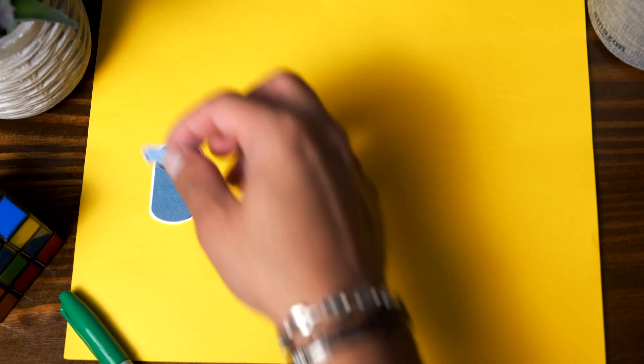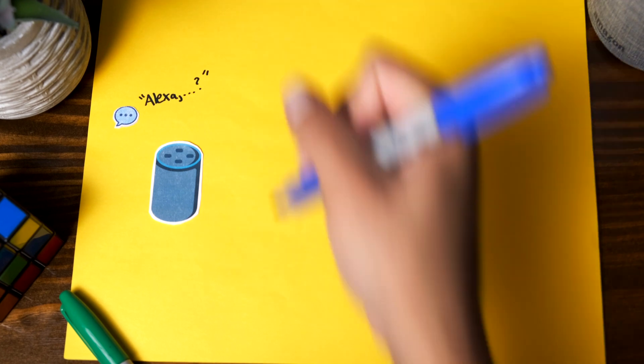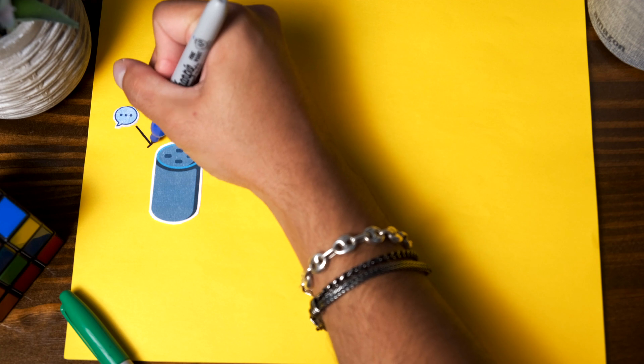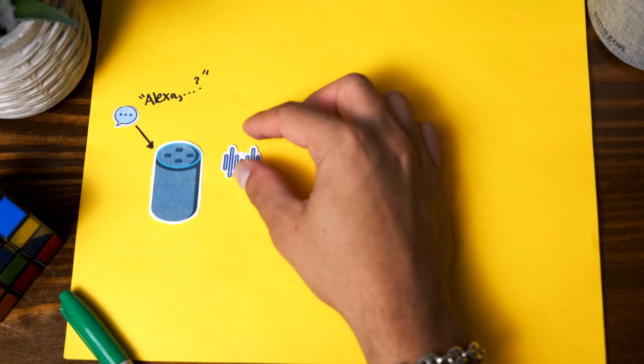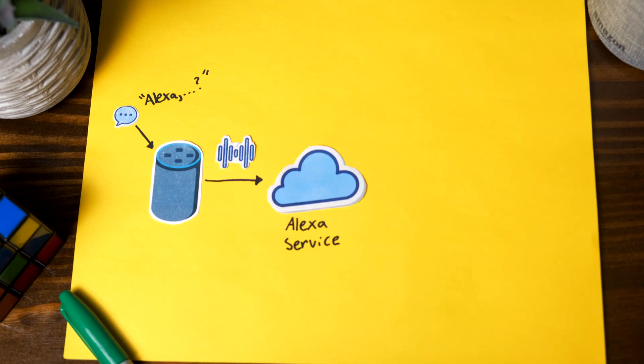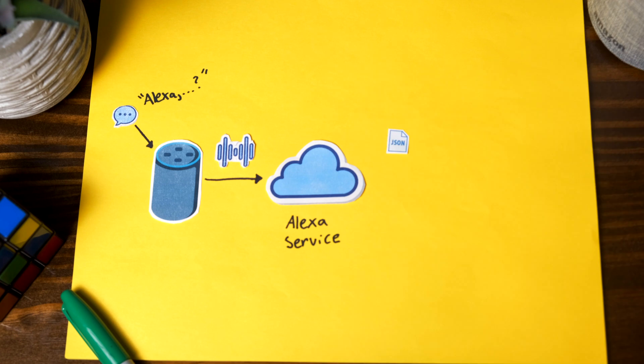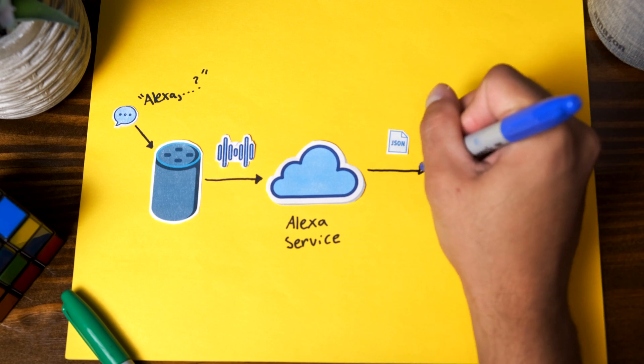So first things first, how does an Amazon Alexa skill actually work? Well, as most of you probably know, whenever you want to interact with an Alexa speaker, the first thing you have to do is say Alexa and then ask the question you want to get an answer for. The Alexa speaker listens to whatever you said and then sends that recorded audio over the internet to a service called the Alexa service. This service uses speech recognition and machine learning to analyze that audio, convert it to text, and then send a JSON object to a listening web server.